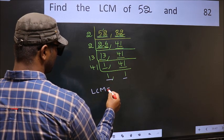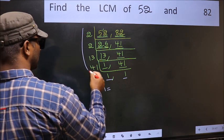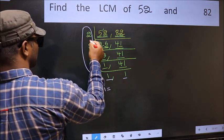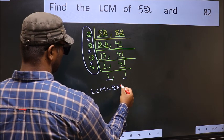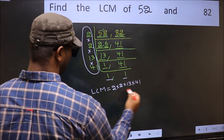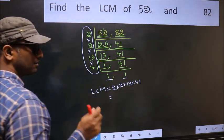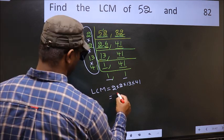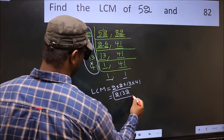So our LCM is, LCM is the product of these numbers. That is 2 times 2 times 13 times 41. When we multiply these numbers, we get 2132 is our LCM.